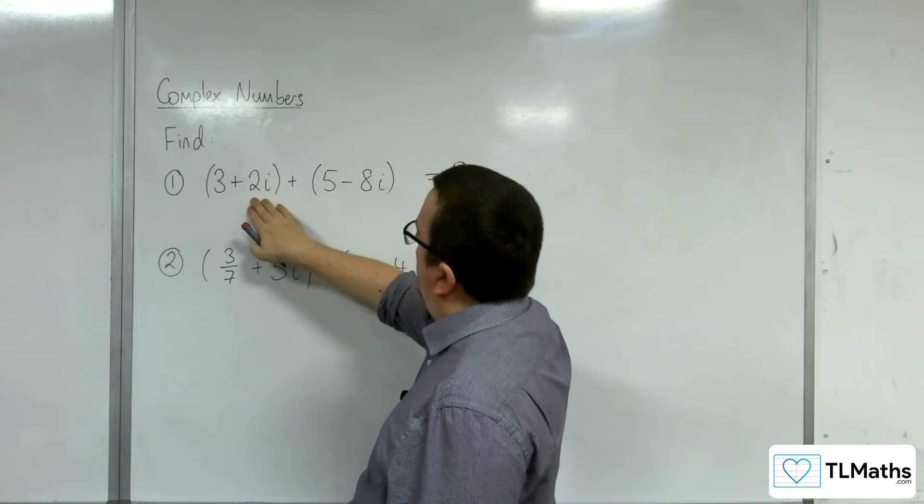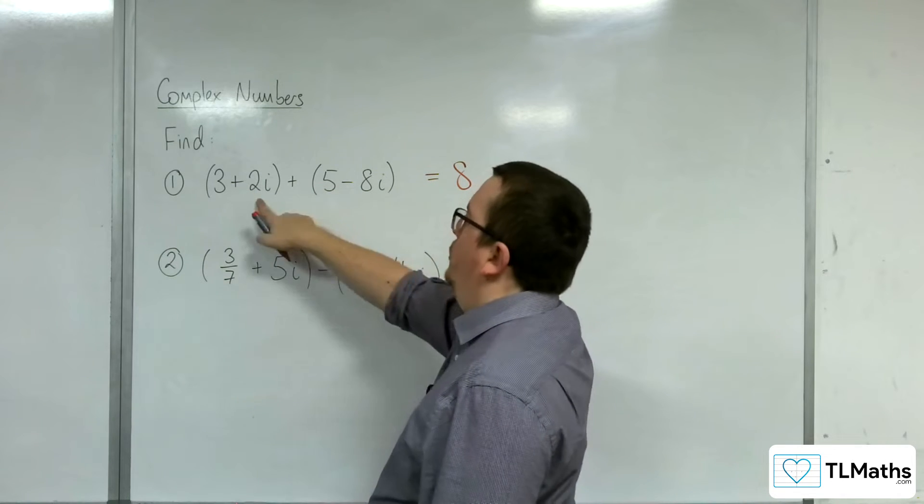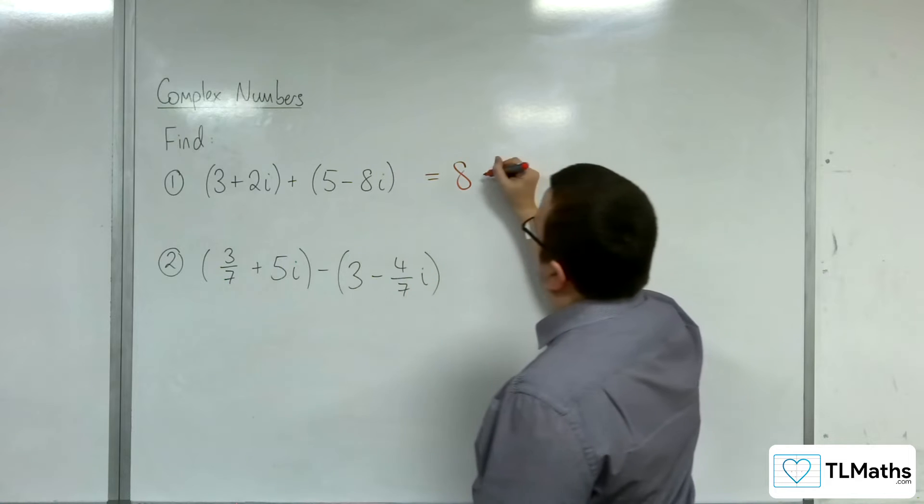And then I've got 2i plus negative 8i. So 2i take away 8i gives us negative 6i.